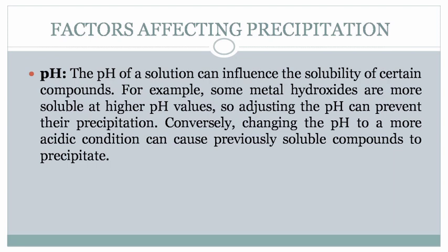Fourth, pH. The pH of a solution can influence the solubility of certain compounds. For example, some metal hydroxides are more soluble at higher pH values, so adjusting the pH can prevent their precipitation. Conversely, changing the pH to a more acidic condition can cause previously soluble compounds to precipitate.